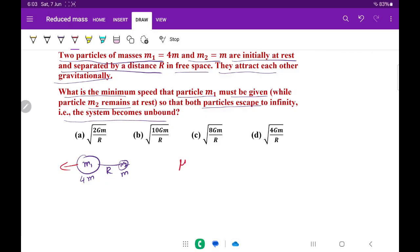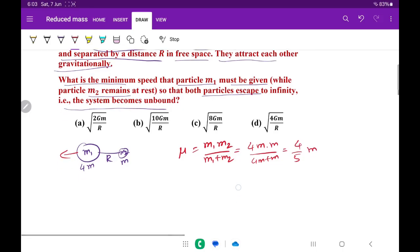We will find mu, which can be given by m1 m2 divided by m1 plus m2. If I substitute the values 4m times m divided by 4m plus m, and simplify, finally I will get 4 by 5 m. This is the reduced mass.